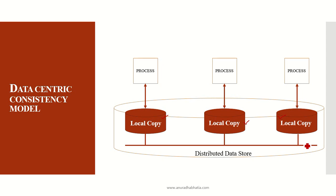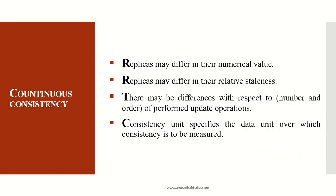Continuous consistency occurs when replicas may differ in their numerical values because they are not updated properly, or they may differ in relative staleness — values that have changed become slightly older. There may also be differences with respect to the number and order of performed update operations. For example, if I performed read-read-write-read but the replica has read-write-read-write, on a longer run this leads to a consistency problem and the system is not continuously consistent.